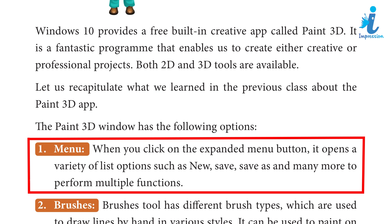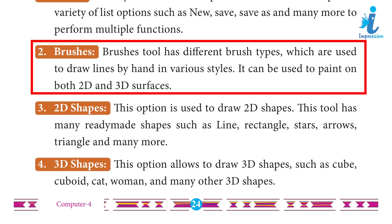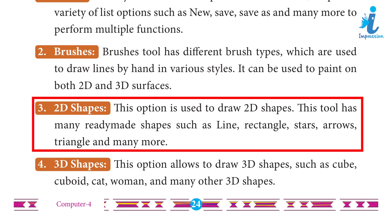2. Brushes: The Brushes tool has different brush types which are used to draw lines by hand in various styles. It can be used to paint on both 2D and 3D surfaces. 3. 2D Shapes: This option is used to draw 2D shapes. This tool has many ready-made shapes such as line, rectangles, stars, arrows, triangles and many more.